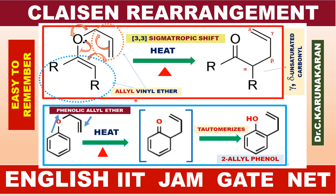There are two types of compounds. The allyl group and the vinyl group. This group is the ether functional group.